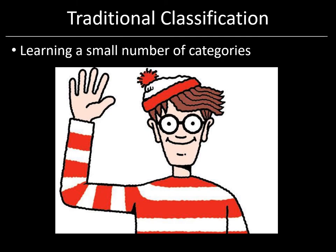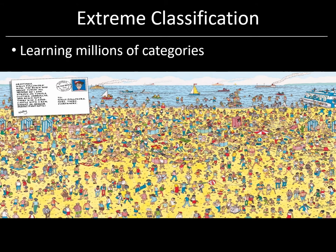In traditional classification, we take an input such as an image, a document or an audio clip and classify it into a small number of categories. For example, a couple of decades ago, image classifiers could recognize hundreds of visual categories and if you had applied them to this popular Wally image, we might have gotten back a few categories such as person, young, hand, non-photo, etc. On the other hand, extreme classification allows us to classify inputs into millions or even billions of categories. So we might want to classify this Wally image into not just a few hundred categories, but say all the words in the dictionary, all the concepts on Wikipedia, the top hundred million queries currently being asked on your favorite search engine, or perhaps even the subset of billions of users who might be interested in finding Wally in this image.